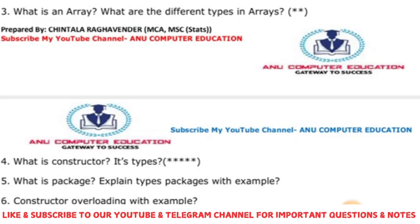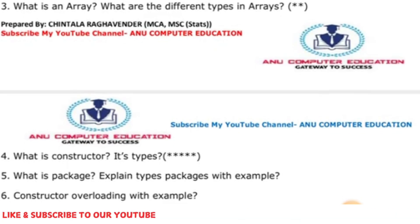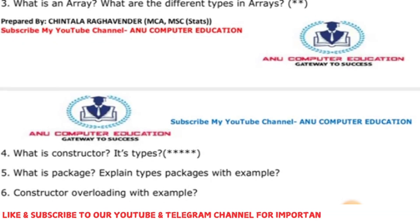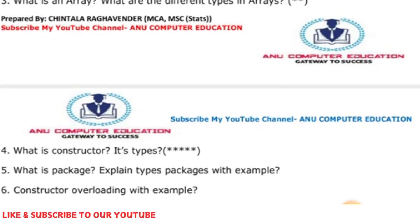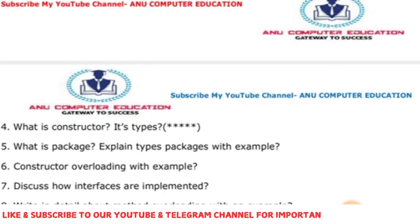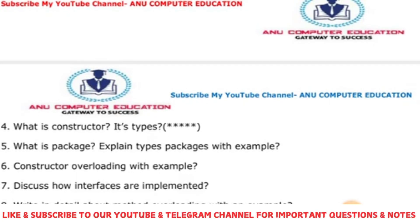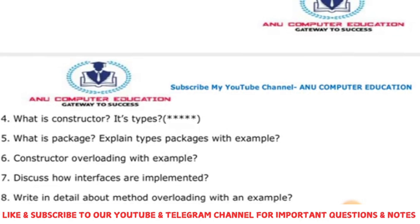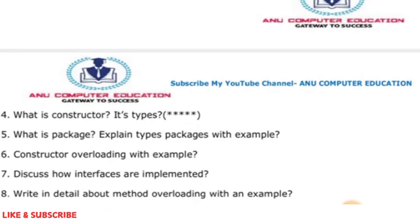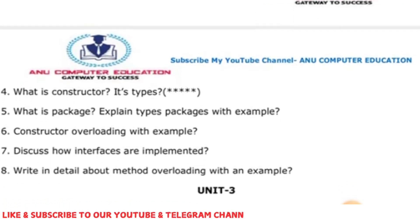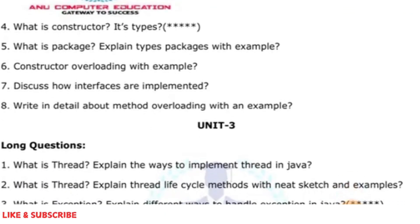Explain what is a package — a collection of classes, interfaces, and sub-packages — with examples. There are two types: user-defined packages and predefined packages; list all predefined packages in Java. Also cover constructor overloading with examples, and discuss how interfaces are implemented — an interface is a collection of abstract methods without implementation; any class implementing it must provide the method bodies, or that class becomes abstract. Cover method overloading with an example as well.